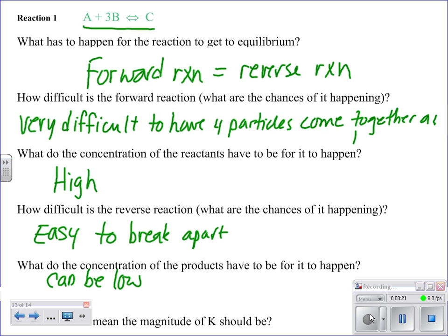And what does that tell us about the magnitude of K? Well, since what we're saying is that this reverse reaction is more likely, it's going to be that your C breaks down to form the four particles, then what that means is that your magnitude is going to be less than one.